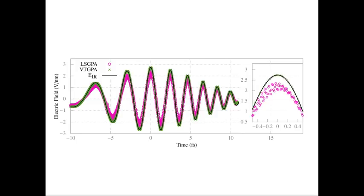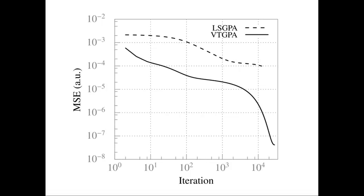Furthermore, we even observe a significant improvement in the VTGPA's ability to predict the exact magnitude of the IR streaking pulse. Overall, the spectrogram retrieval was improved by around three orders of magnitude.